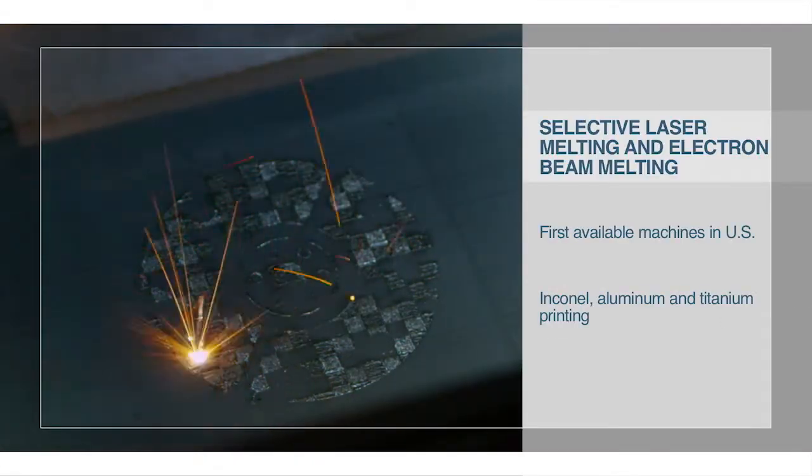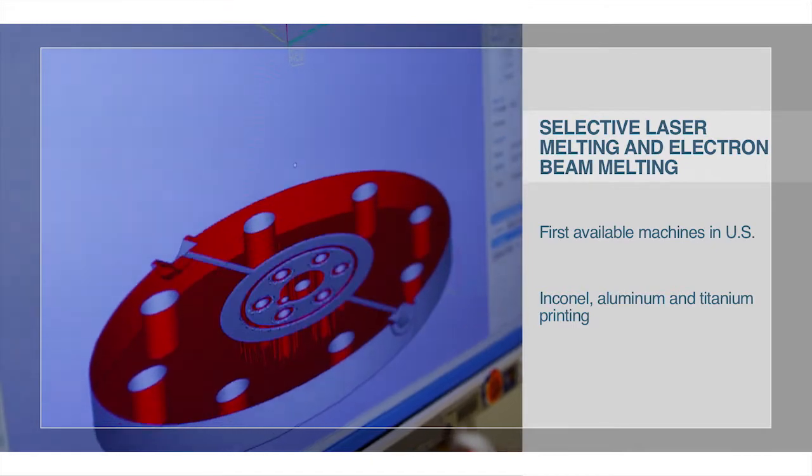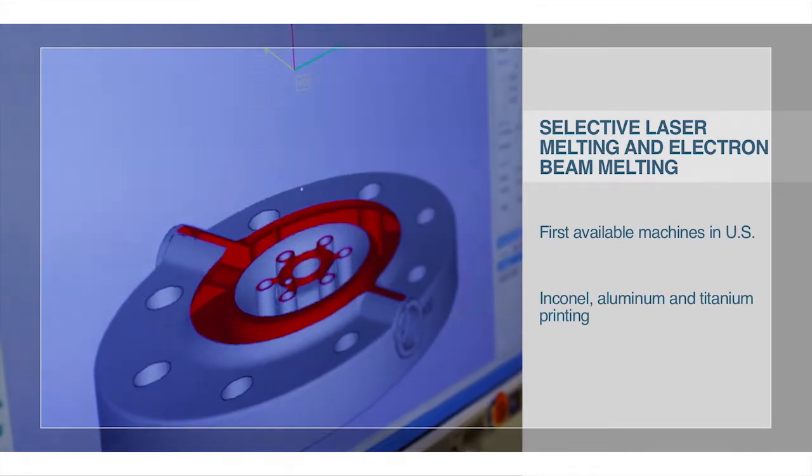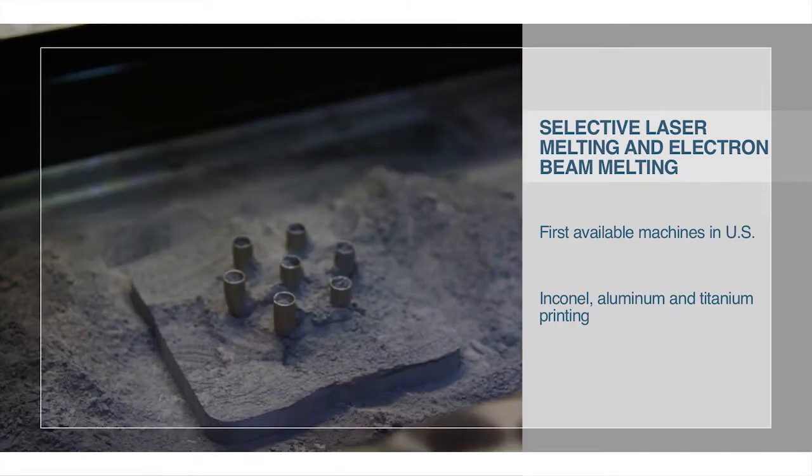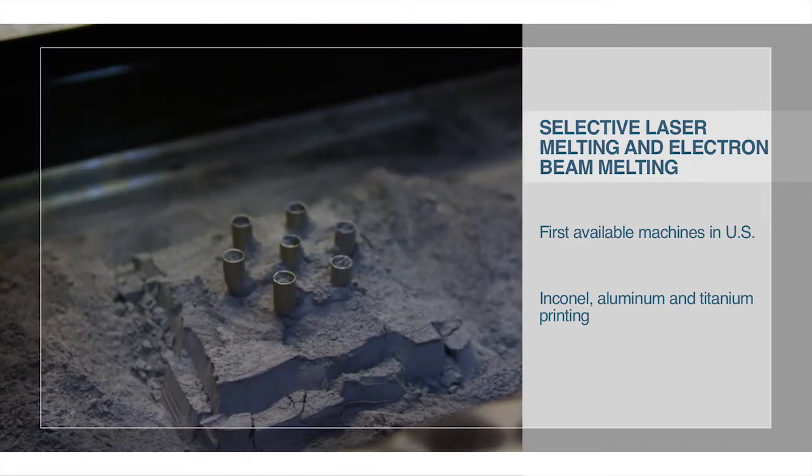Laser sintering and electron beam melting use a directed energy source to melt shapes into a bed of powder from aluminum to titanium, thus forming a solid full-strength object directly.